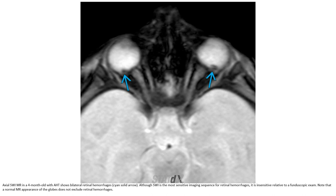SWI MR in a 4-month-old with abusive head trauma shows bilateral retinal hemorrhage. Although SWI is the most sensitive imaging sequence for retinal hemorrhage, it is insensitive relative to the fundoscopic exam. Note that a normal appearance of the globe on imaging does not exclude retinal hemorrhage.